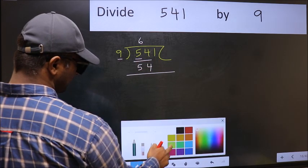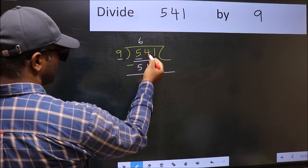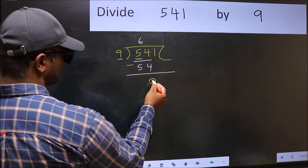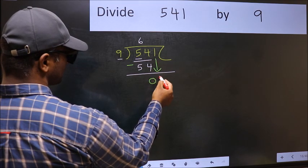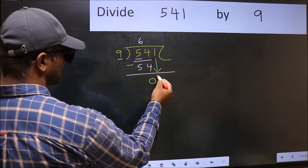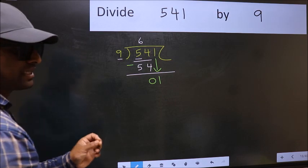Now you should subtract. 54 minus 54 is 0. After this, bring down the beside number. So 1 down. After this step, the mistake happens.